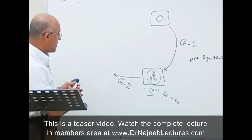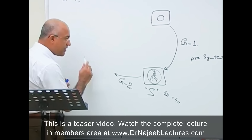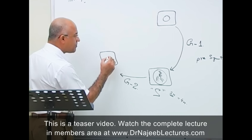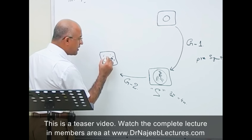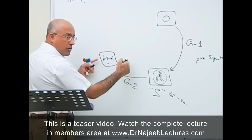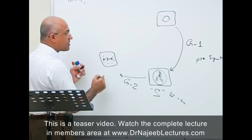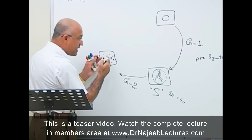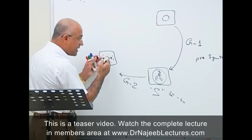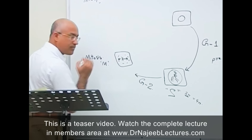Once the cell has been through the G2 phase it will enter into the next phase, where it is going to divide the genetic material. The nuclear membrane will eventually dissolve and genetic material will go to both sides of the cell so that it can form two new daughter nuclei. The phase in which the duplicated chromosomes are undergoing division for the two daughter nuclei is called the mitotic stage — M phase.